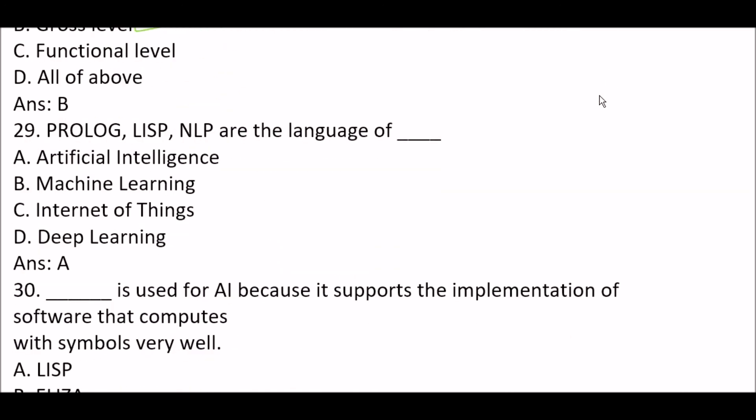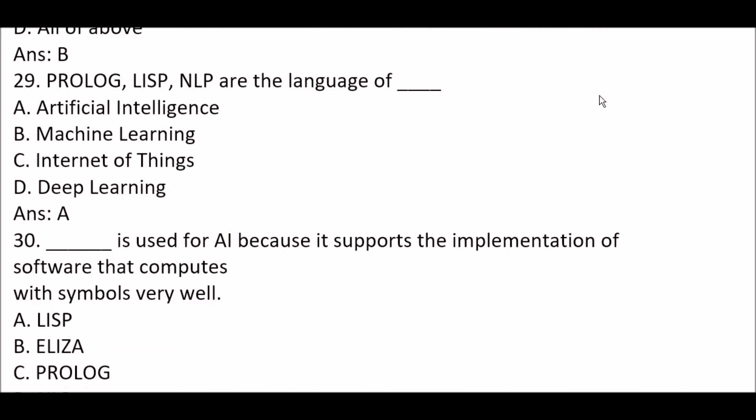Next question: Prolog, Lisp, and NLP (natural language processing) are the languages of — Option A: artificial intelligence. Option B: machine learning. Option C: internet of things. Option D: deep learning. The right answer is Option A — Prolog, Lisp, and NLP are the languages of artificial intelligence.